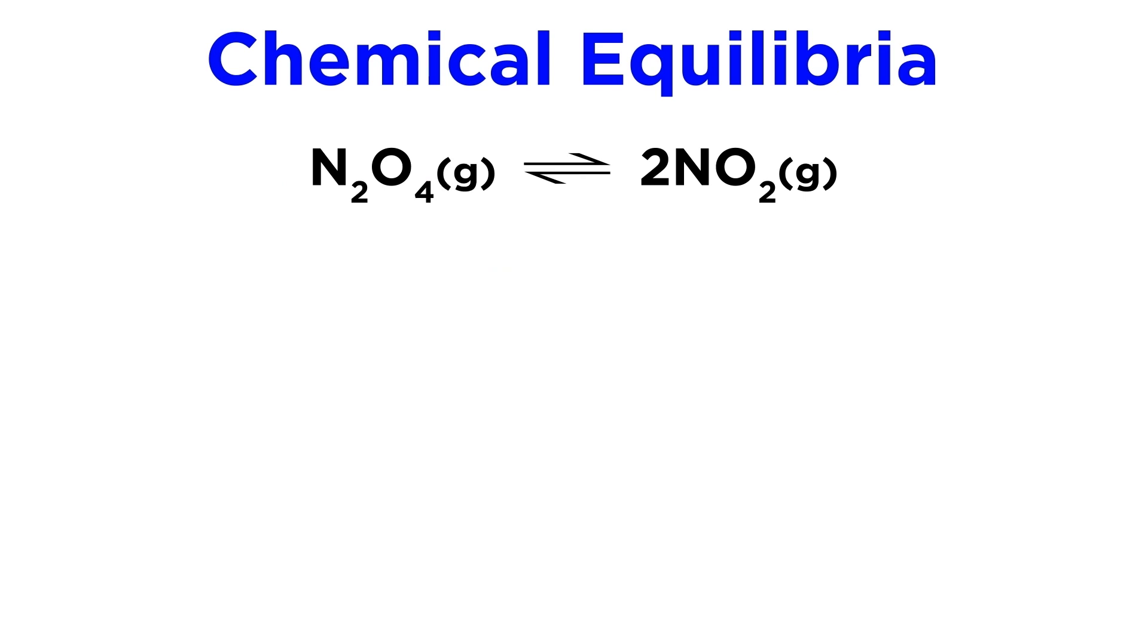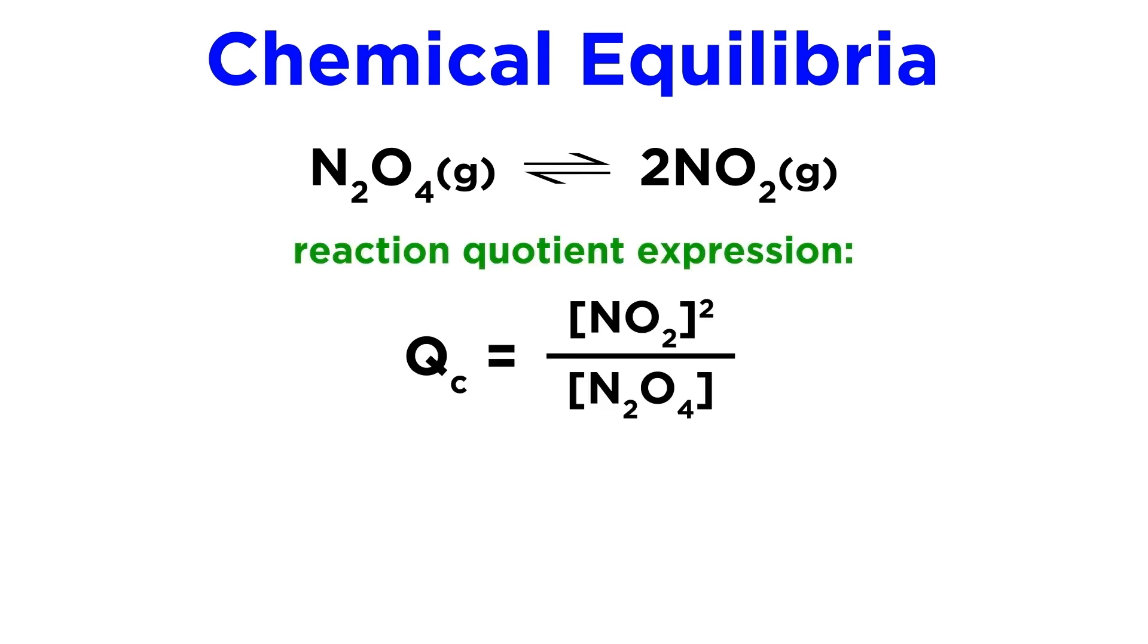So for the following equilibrium involving N2O4 and NO2, the reaction quotient, or Qc, since we are using solution concentrations, will be as follows. Note that NO2 concentration is squared because of the coefficient of 2 from the equilibrium.